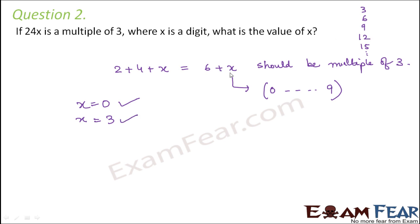Next multiple is 12. So what should you add to get 12? You have to add 6. So x equals 6 is also a possible value. What is the next multiple of 3? That is 15. So what should you add to 6 to get 15? You have to add 9. Next one would be 18, but to get 18 you will have to add 12. So x cannot be 12 because x is a digit. Therefore, these are the only possible values that x can take: x can be 0 or 3 or 6 or 9.